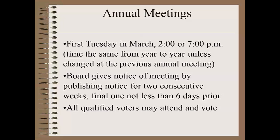The board, by law, has the obligation to give notice of the annual meeting by publishing notice in the newspaper for two consecutive weeks, with the second notice being no less than six days prior to the annual meeting. And all qualified voters of the district may attend the annual meeting and may vote.